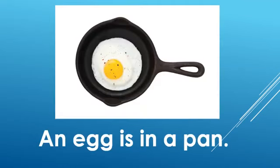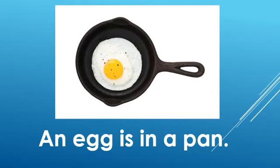Now, what do you see in this picture, children? There's a big black pan — and what is in the pan? An egg is in a pan. Why do we say 'an egg'? Whenever a word starts with a vowel, we say 'an.' It could be an egg, an apple, an igloo, an umbrella, an octopus — like that. Whenever a word starts with a vowel, we use 'an.' An egg is in a pan.